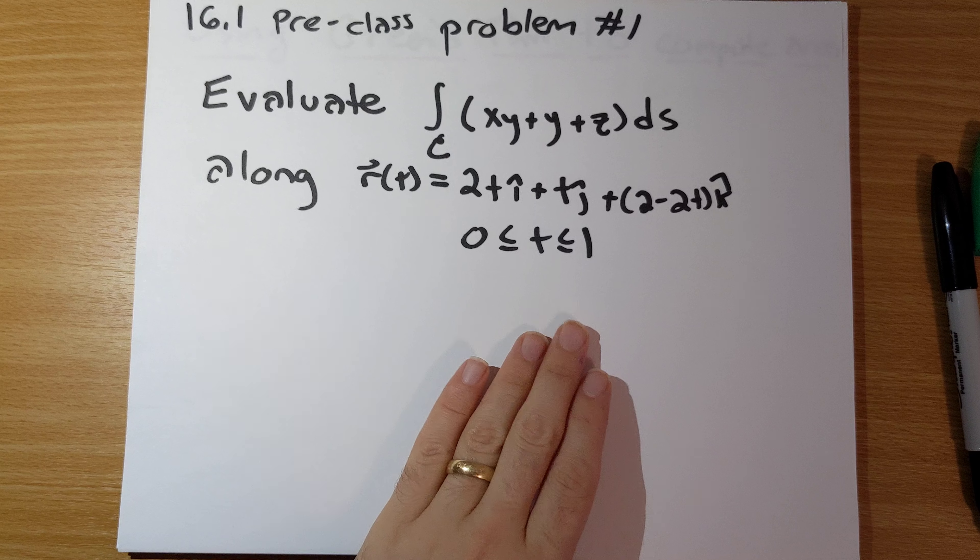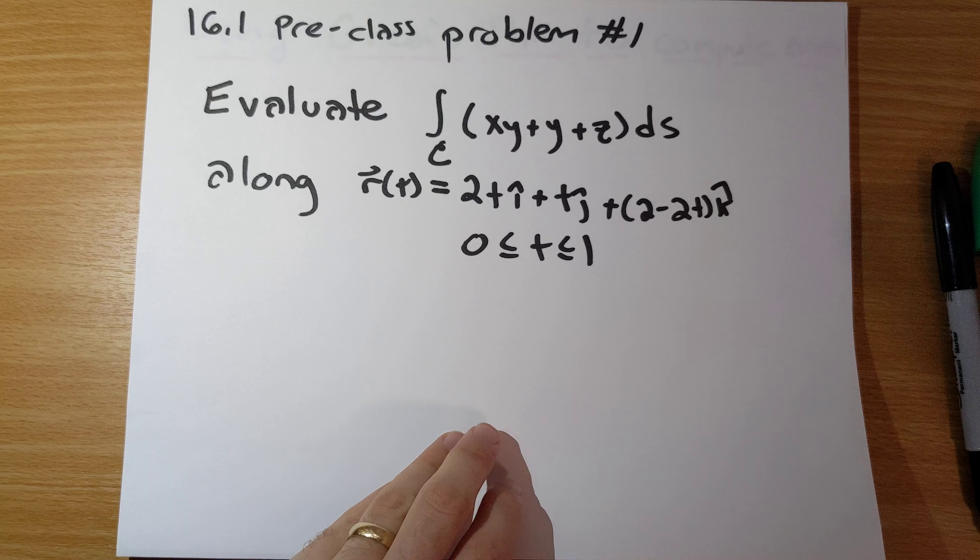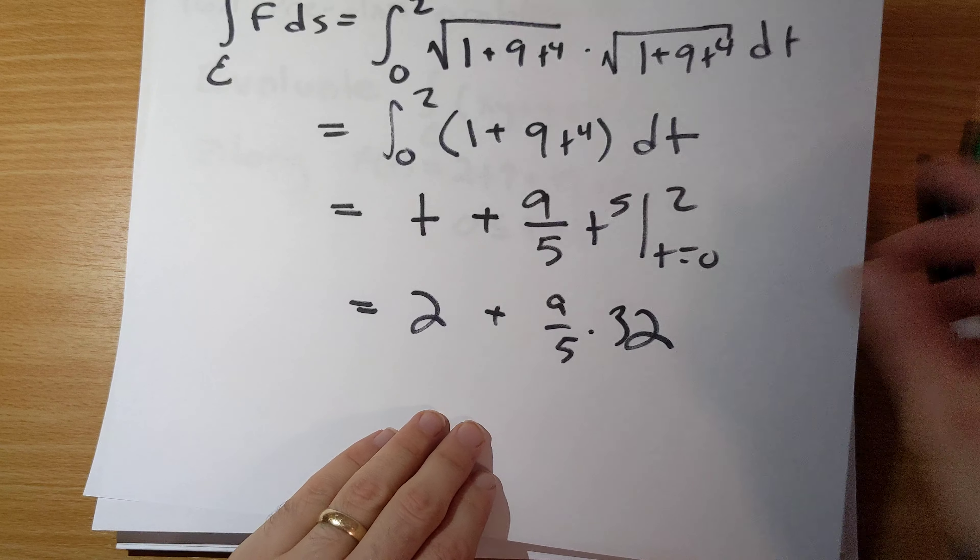Evaluate this, the integral of xy plus y plus z ds. Along here I'm giving you r of t is 2t i hat plus t j hat plus (2 minus 2t) k hat. t runs from 0 to 1.